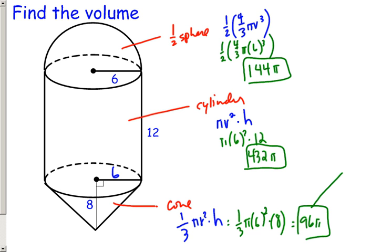Combining all of these into one big volume, you get 144 plus 432 plus 96, gives me my total volume, which is 672. And it's volume, so you're talking about cubic units that fit inside.